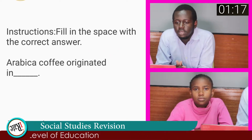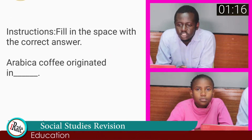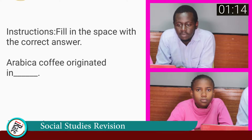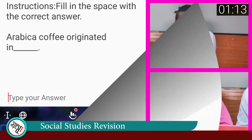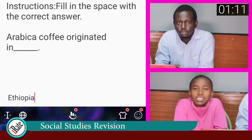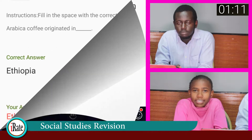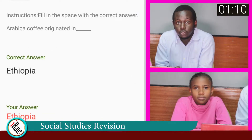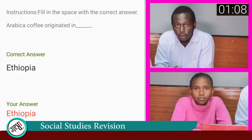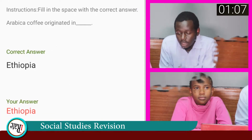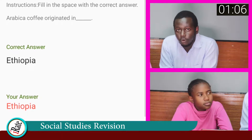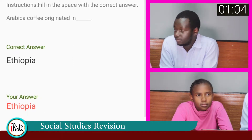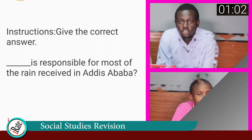Question number seven: Arabica coffee originated in? The correct answer is Ethiopia. Will you kindly share with us one type of coffee that is grown in Kenya? Robusta.